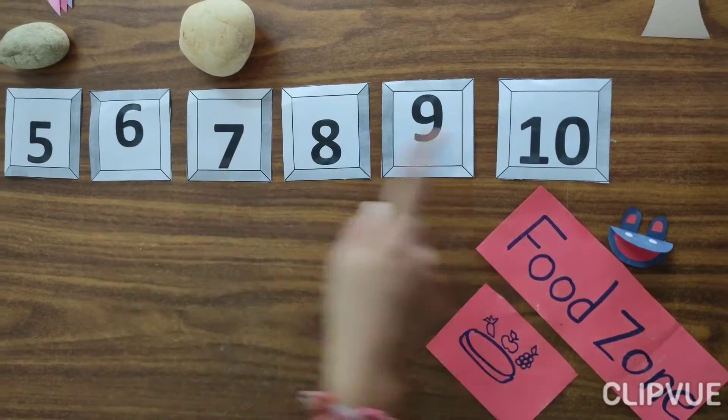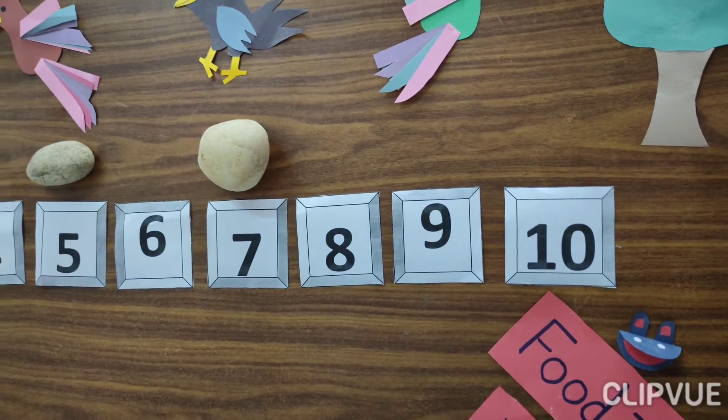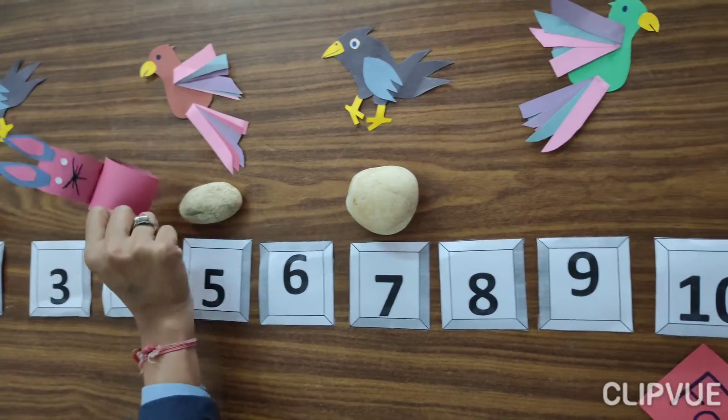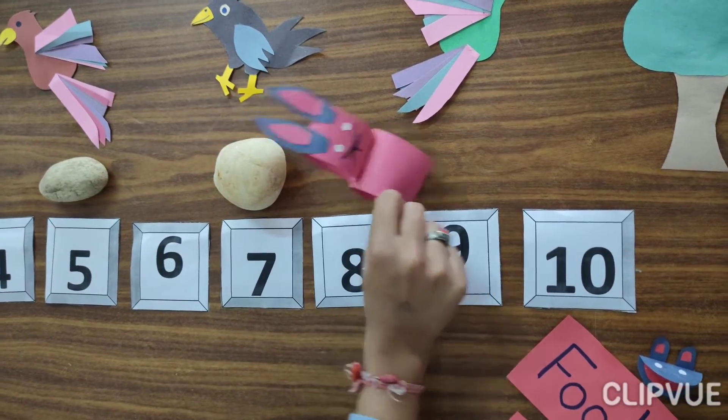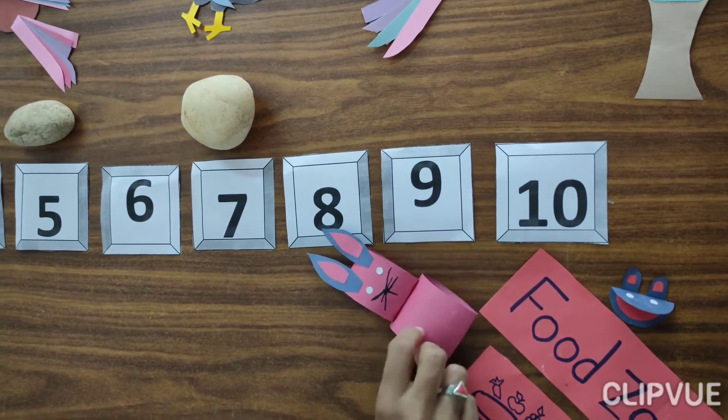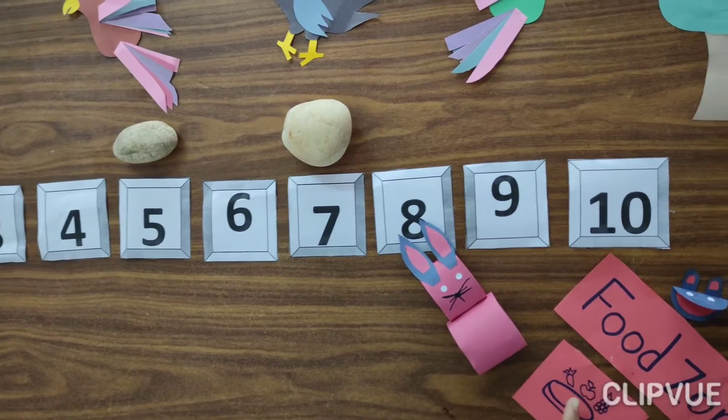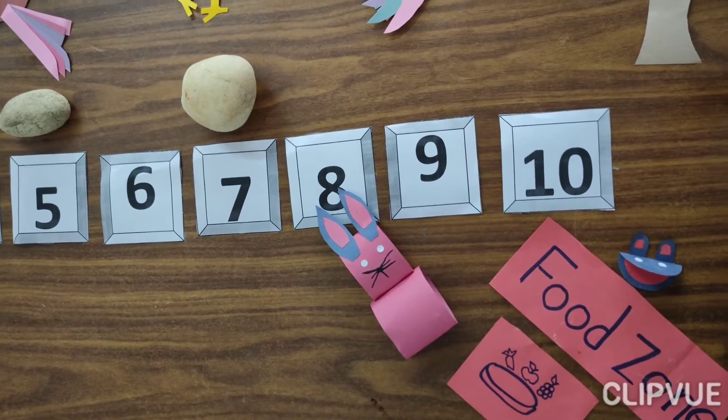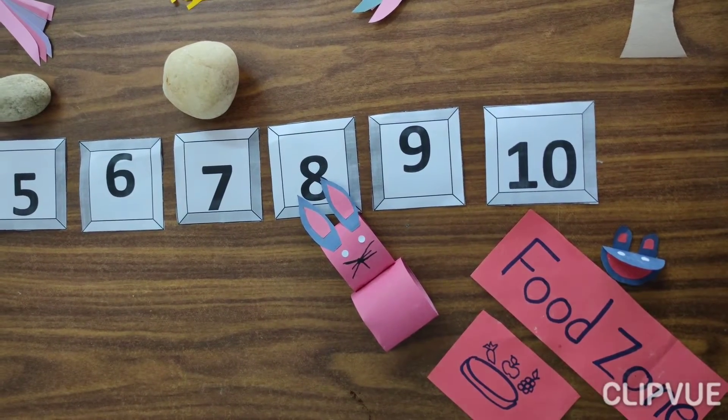The frog was going in forward direction. The rabbit also jumped on the stones going in forward direction. Rabbit likes carrot, so he eats carrots. Frog likes other food, so he also eats food.